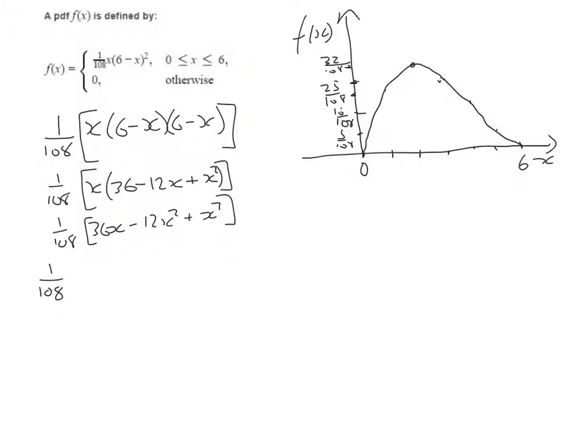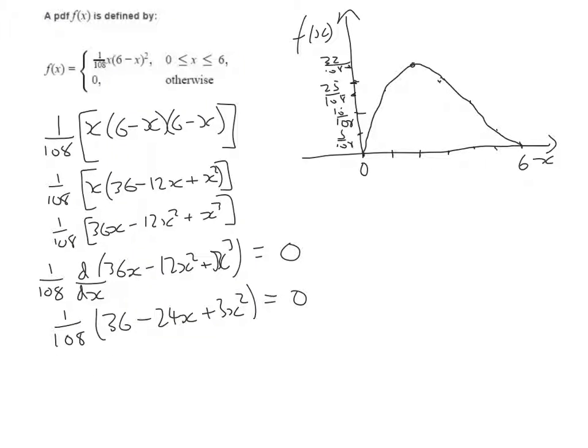Now if we differentiate this, keeping the 1/108 outside, we should get that it equals 0 at the turning points. So we have 1/108 times (36 - 24x + 3x²). Now we just have a quadratic to solve, which will tell us where the turning point is.